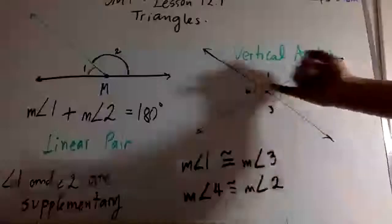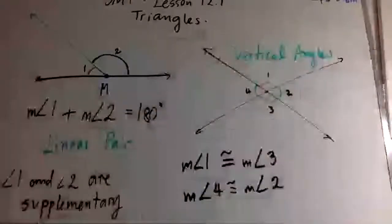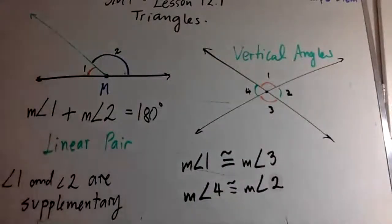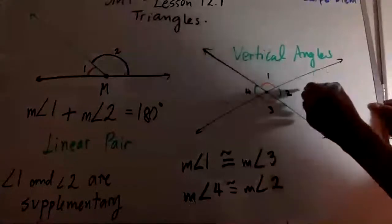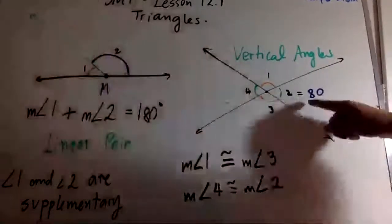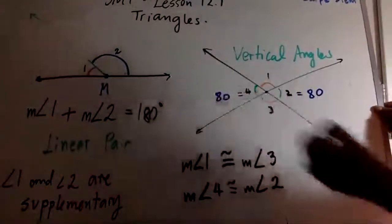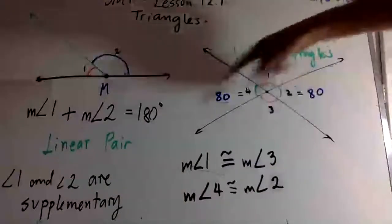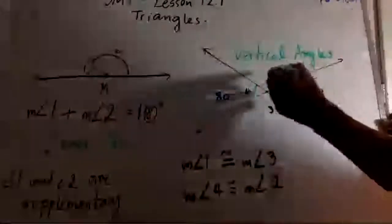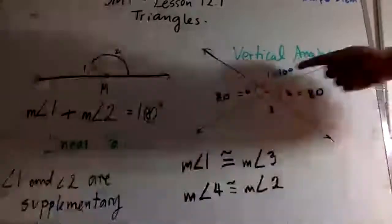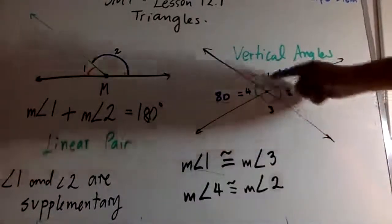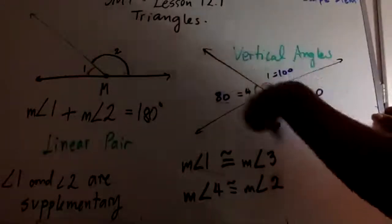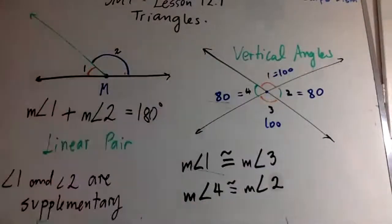So angles one and three are vertical angles, meaning they are equal. For example, if angle two is 80 degrees, you can immediately say angle four is also 80. And because one and two are supplementary, angle one is 100 degrees. Since angle one is vertical to angle three, angle three is also 100 degrees — and you can solve for all four angles this way.